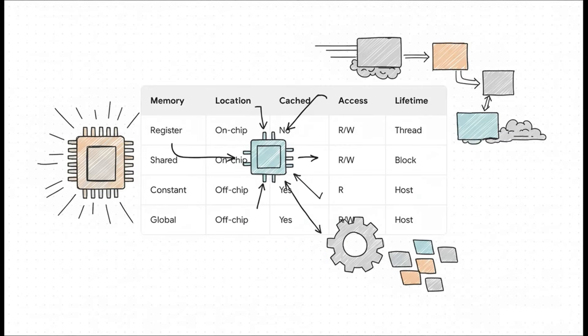And on top of all that, developers have to manually juggle all these different types of memory on the GPU. Each one from the lightning fast on-chip registers to the slower global memory has different speeds, different sizes, and its own set of rules. It is just another layer of complexity you have to completely master just to write code that runs well.